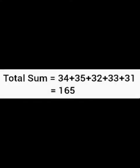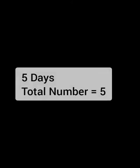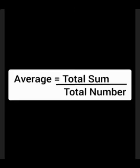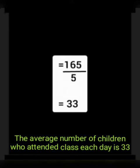What do we have to find out? First, we have to find out the total sum. We have to add 34 plus 35 plus 32 plus 33 plus 31, and we get 165. We then divide by 5. 165 divided by 5, we get 33. So, 33 number of children attended classes each day.